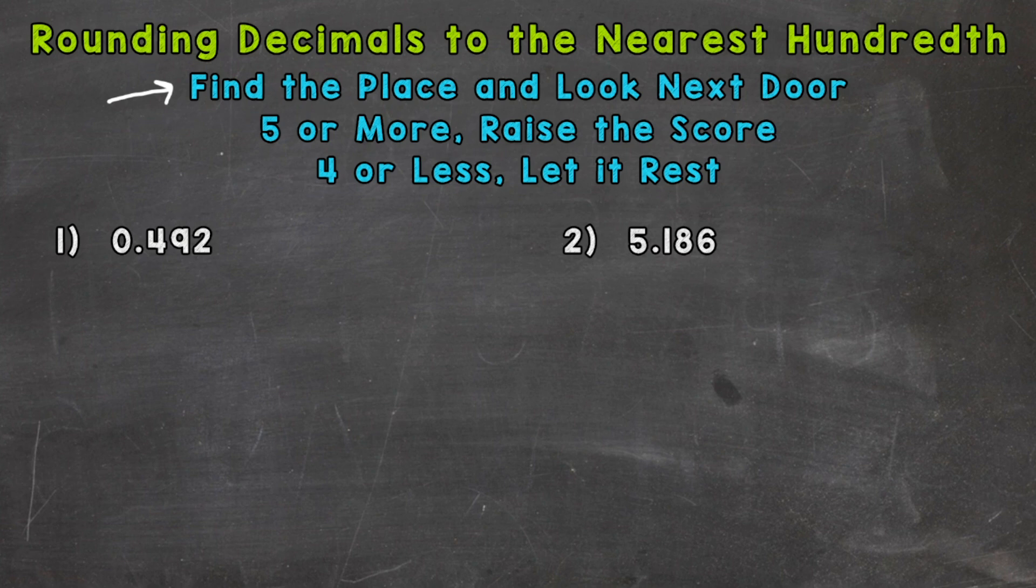So we're rounding to the hundredths. So we have a nine in that place. And we need to look to the right as far as next door goes. Always to the right when rounding. So we have a two there.